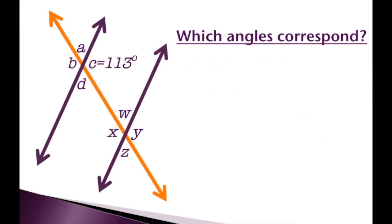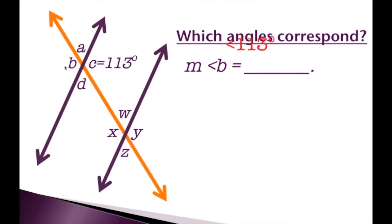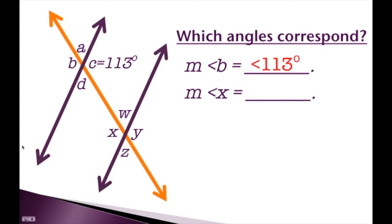This is basically the same diagram as the last example. The only difference is that we've given angle C a value of 113 degrees. So what's the measure of angle B? Angle C and angle B are actually vertical angles, so the measure of angle B is 113 degrees. How about the measure of angle X? Since the measure of angle B is 113 degrees, and angle B corresponds to angle X, the measure of angle X is also 113 degrees, because corresponding angles are congruent.